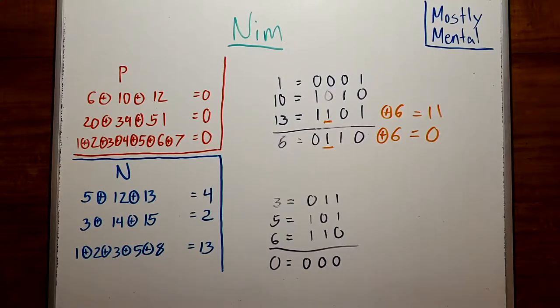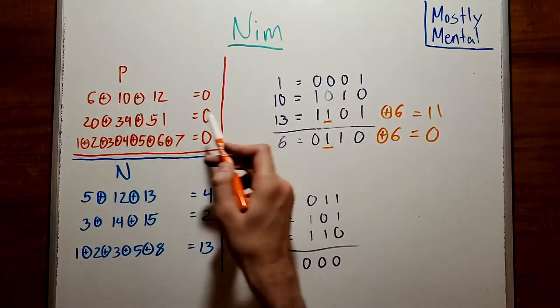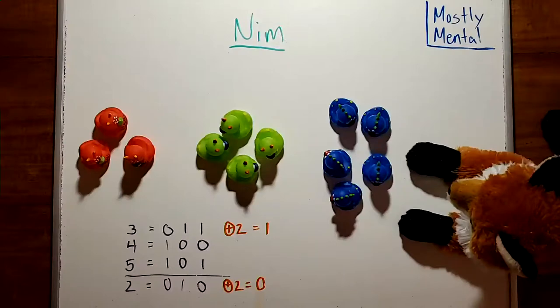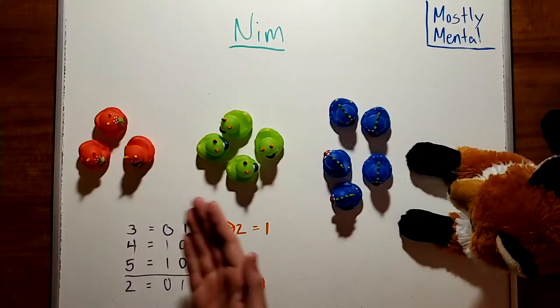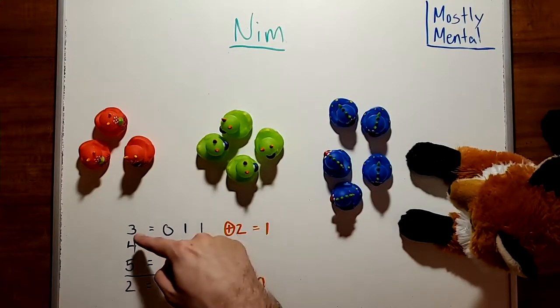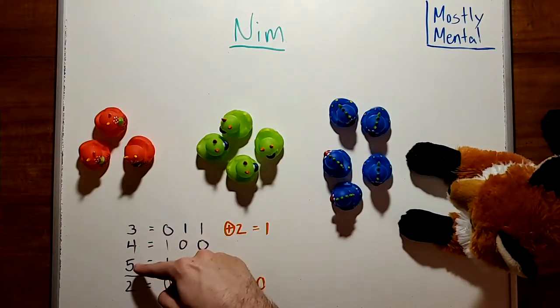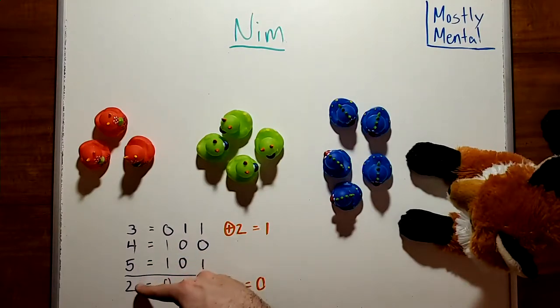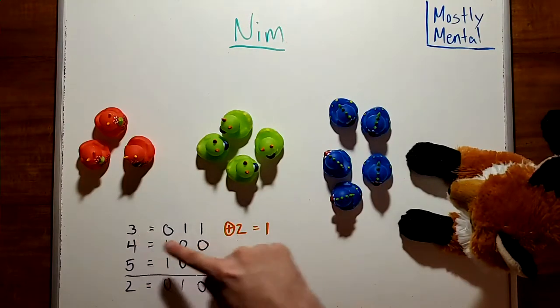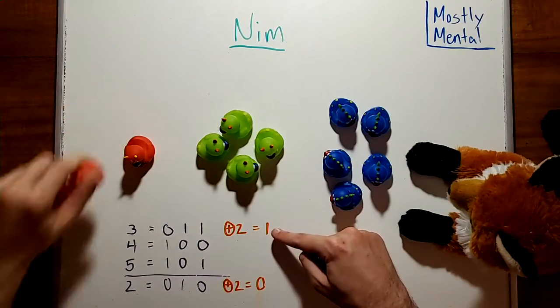So, a NIM position is a P position if and only if the sum is zero. Returning to our original game with piles of sizes three, four, and five, how can I win? Well, adding the piles, three plus four plus five, with our NIM addition, we get two. And that's not zero, so this is an N position, which means there is some winning play. In this case, the only move that makes the sum zero is to turn this three into a one by removing two counters.